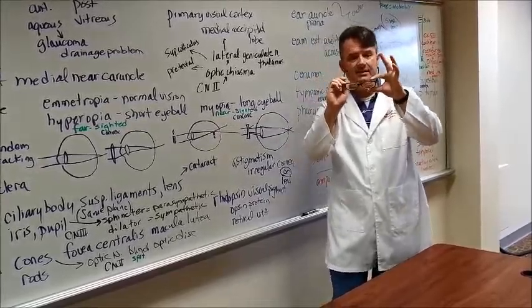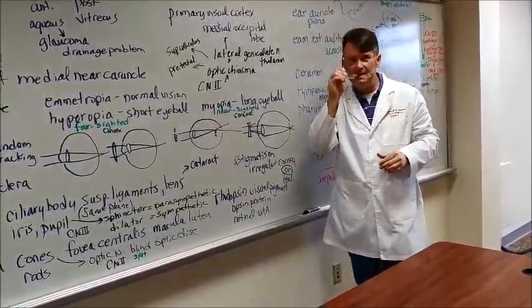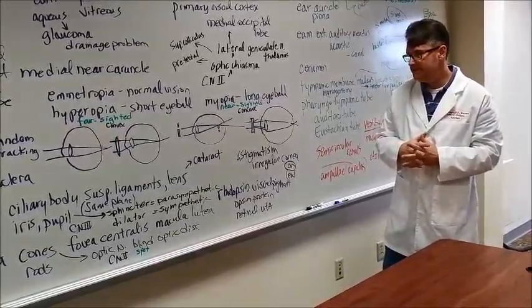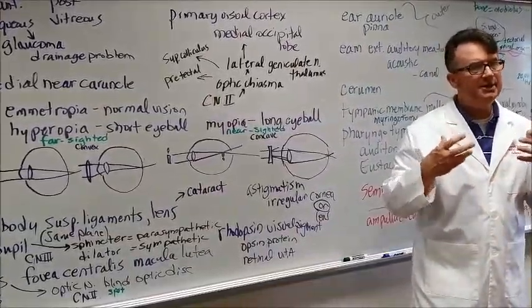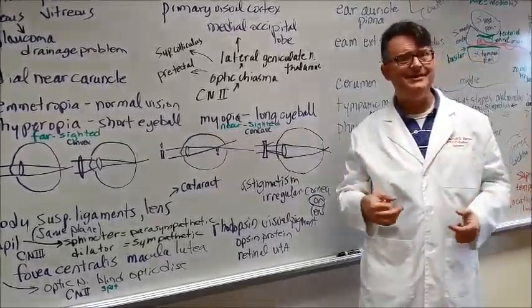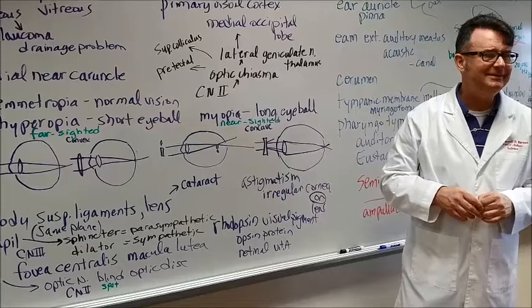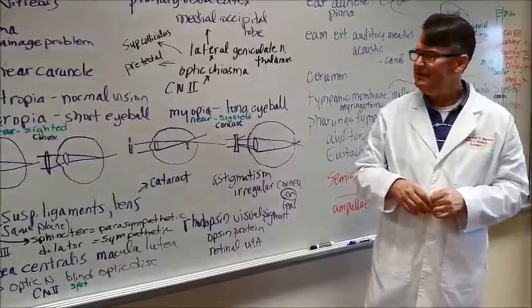Astigmatism is when there is an irregular cornea or lens. I notice that with my glasses, my left lens distorts the light bank far more than my right lens does. So I'm thinking that this lens, my left lens, is correcting for astigmatism more than my right lens.